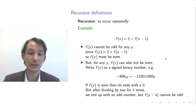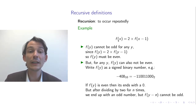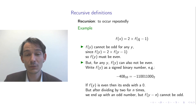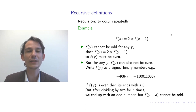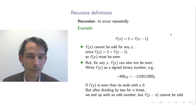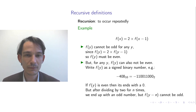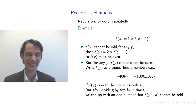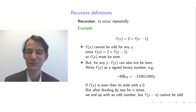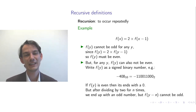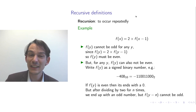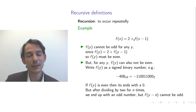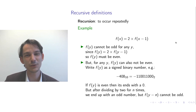So then only one thing remains: zero. Suppose we plug in zero — f(0) = 2 times f(−1). What if f is always zero? Then f(0) = 0 and 2 times 0 is also 0, so the specification holds. So there exists a function — namely the function in which every number maps to zero — that satisfies this specification. Interesting.